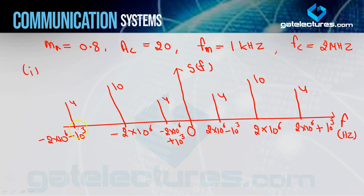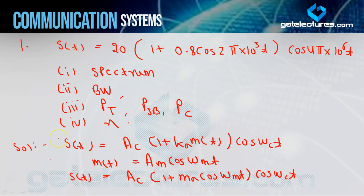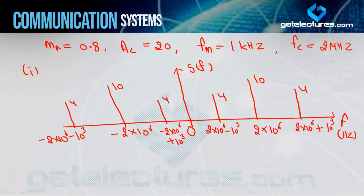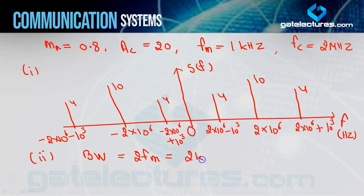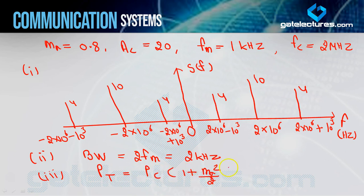The second question asks for bandwidth. The formula for AM bandwidth is BW = 2·fm. So BW = 2×1 kHz = 2 kHz. You can also read this directly from the spectrum. That is the bandwidth of this AM signal.